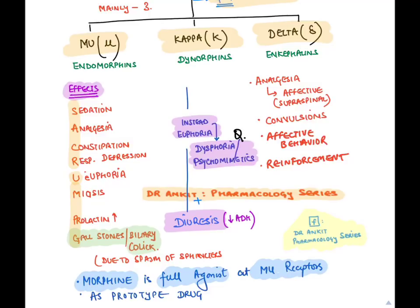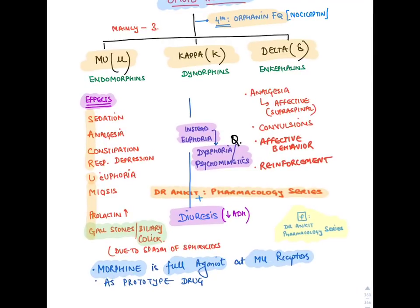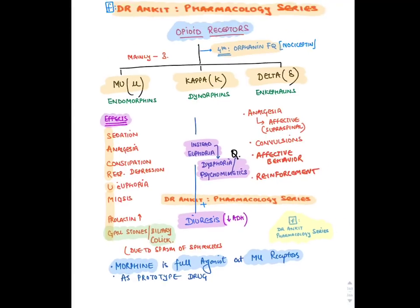Mu receptor effects — mnemonic SACRUMPGS: Sedation, Analgesia, Constipation, Respiratory depression (cause of death), euphoria (cause of addiction), Meiosis (pinpoint pupil), increased Prolactin, Gallstones/biliary colic due to GIT sphincter spasm. Mu receptor is highly addictive. Kappa receptor produces same effects except dysphoria instead of euphoria — making kappa non-addictive — and also causes diuresis by suppressing ADH. Delta receptor acts mainly in brain: supraspinal/affective analgesia, convergence, affective behavior, reinforcement. Morphine is a full agonist at mu receptors, causing euphoria and addiction.